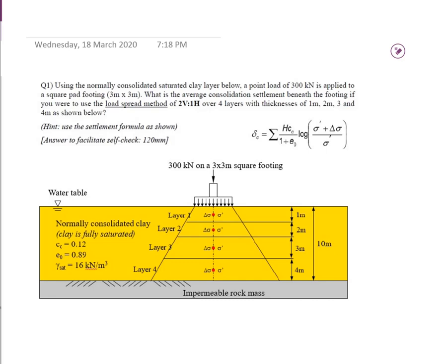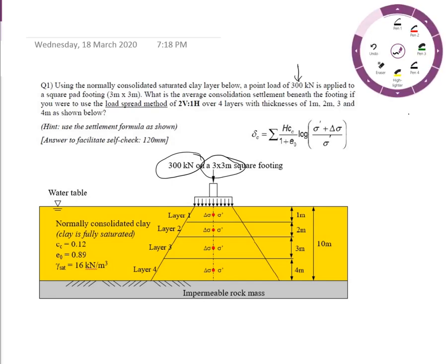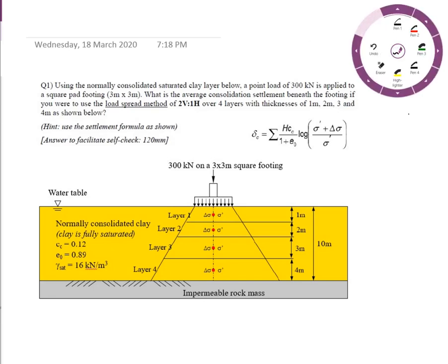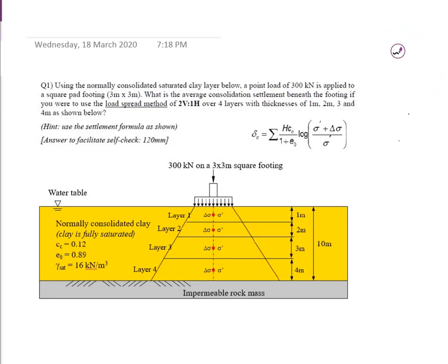This is question one from the tutorial. It gives a load of 300 kilonewtons on a 3 meter by 3 meter square footing. The question asks for the average consolidation settlement using the load spread method of two vertical to one horizontal.